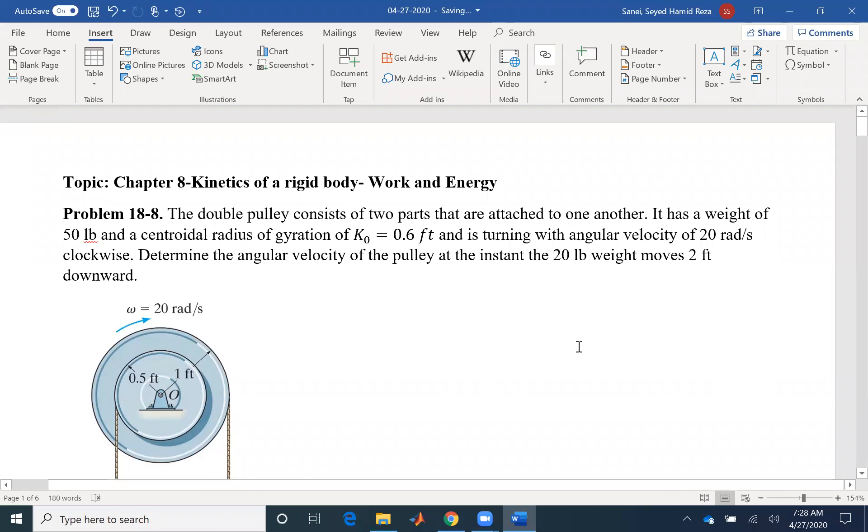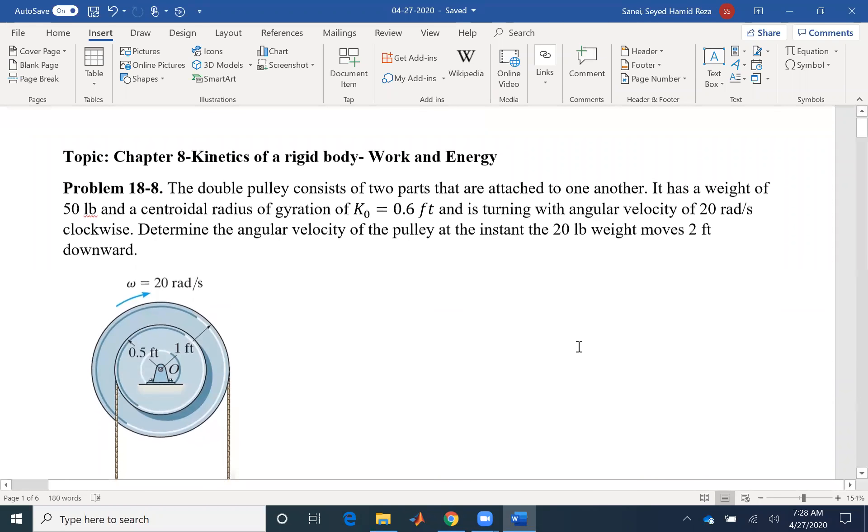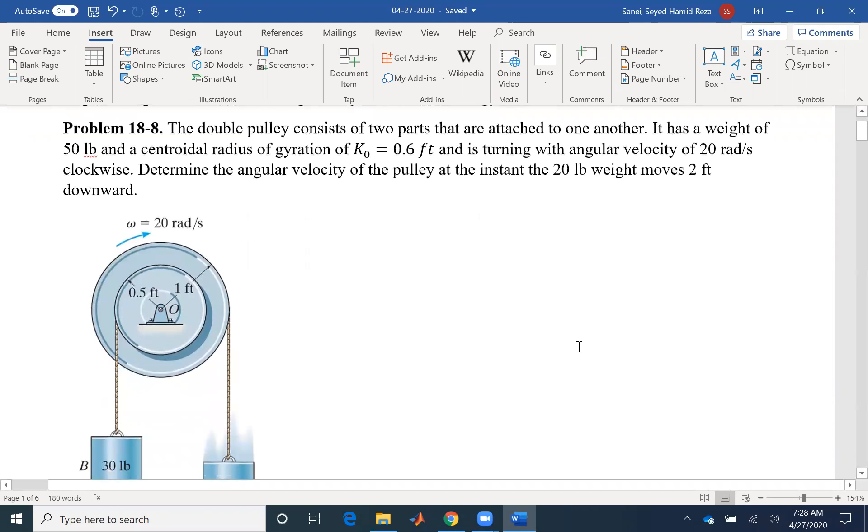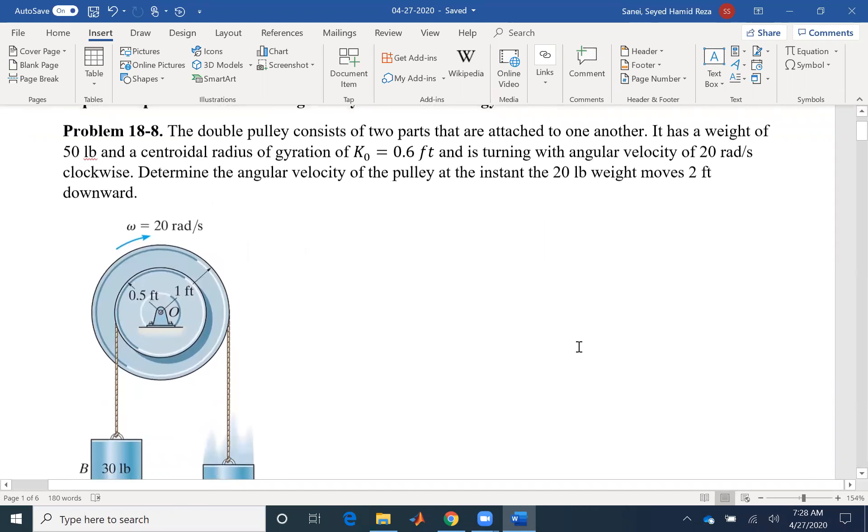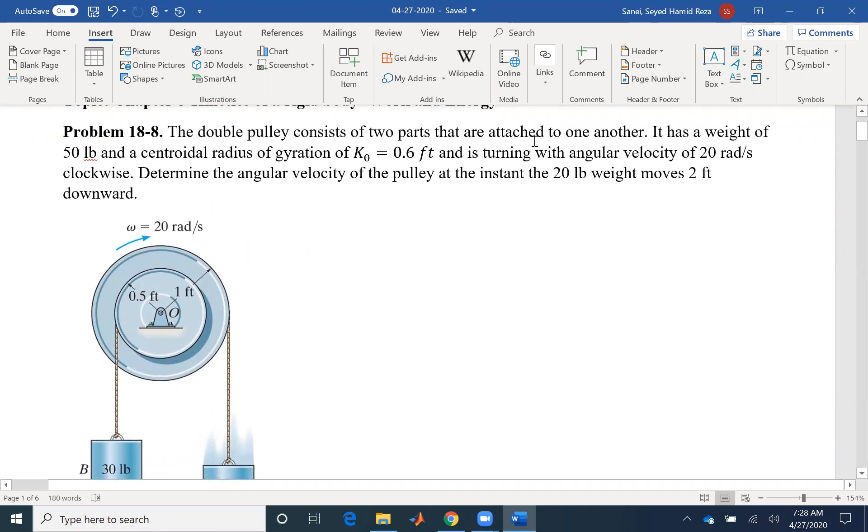Hello everyone. Today we are going to solve a problem for kinetics of a rigid body using work and energy. The double pulley consists of two parts that are attached to one another. So when it says they are attached to one another, it means that they have the same angular velocity.